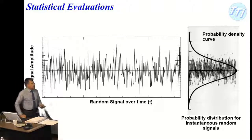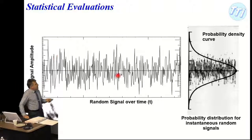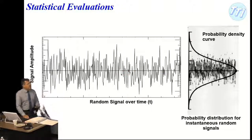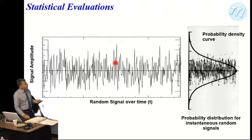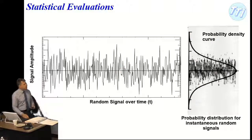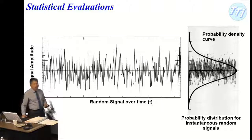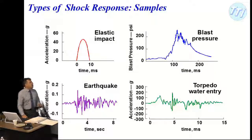For random vibrations, we're going to plot the probability of certain peaks occurring. Low-amplitude peaks occur a lot; high-amplitude peaks don't occur very often. We'll use that distribution to understand and control random vibration tests.